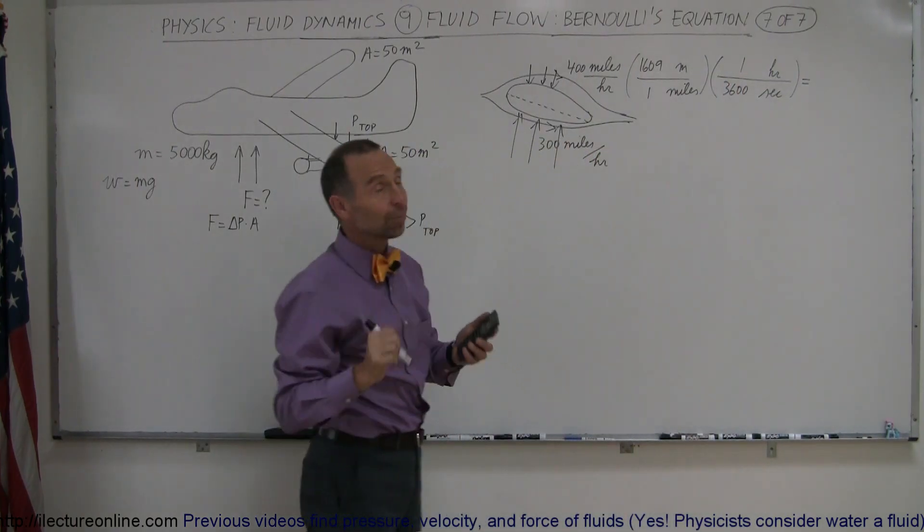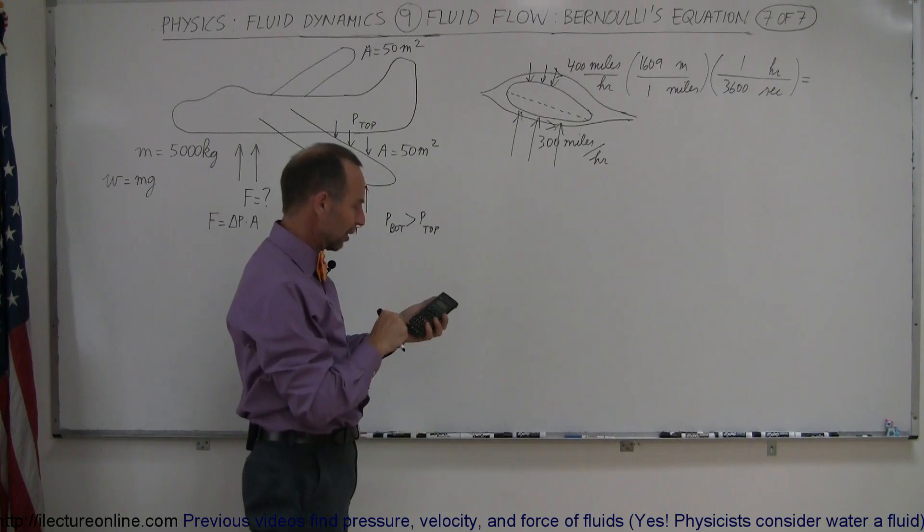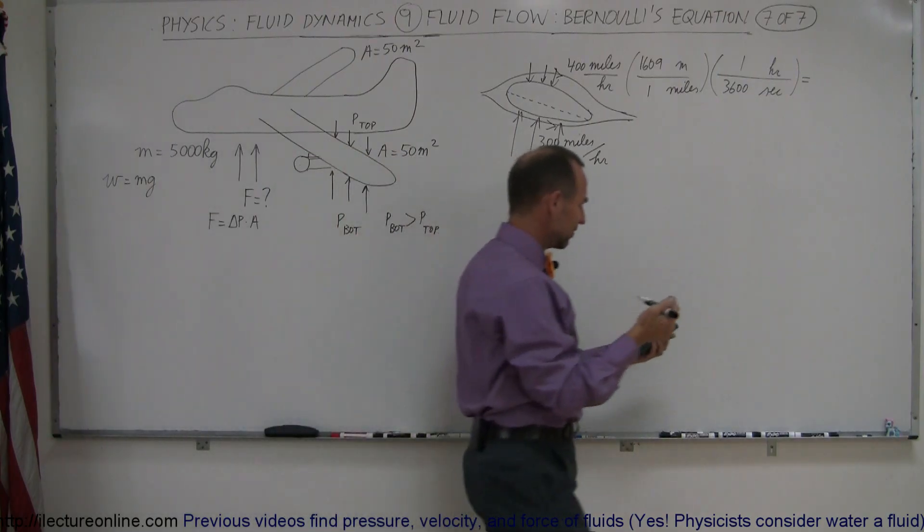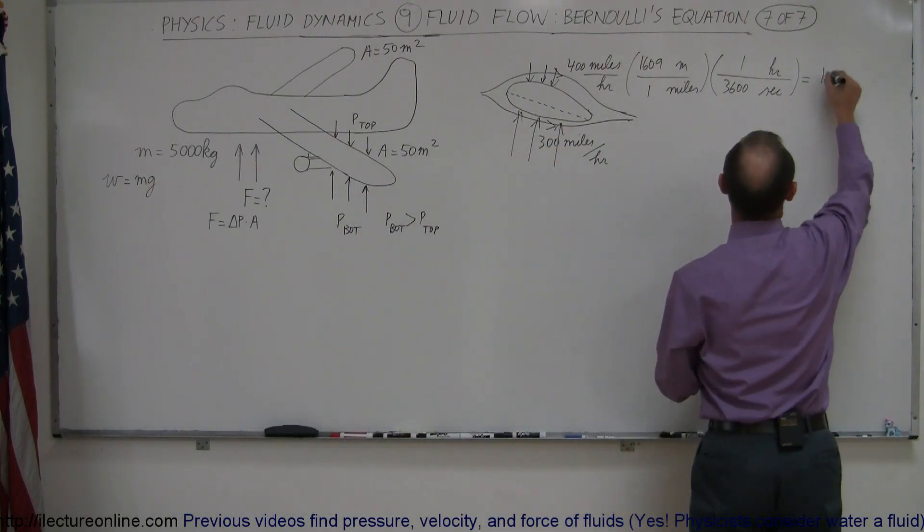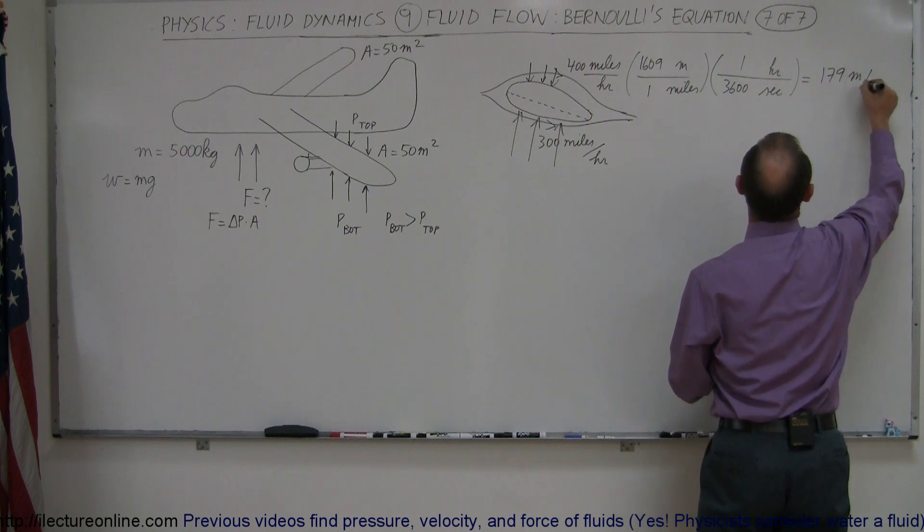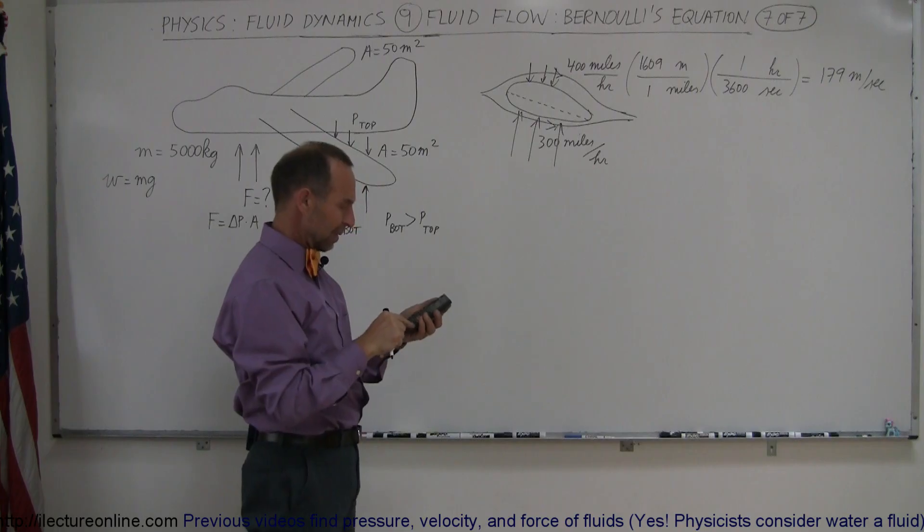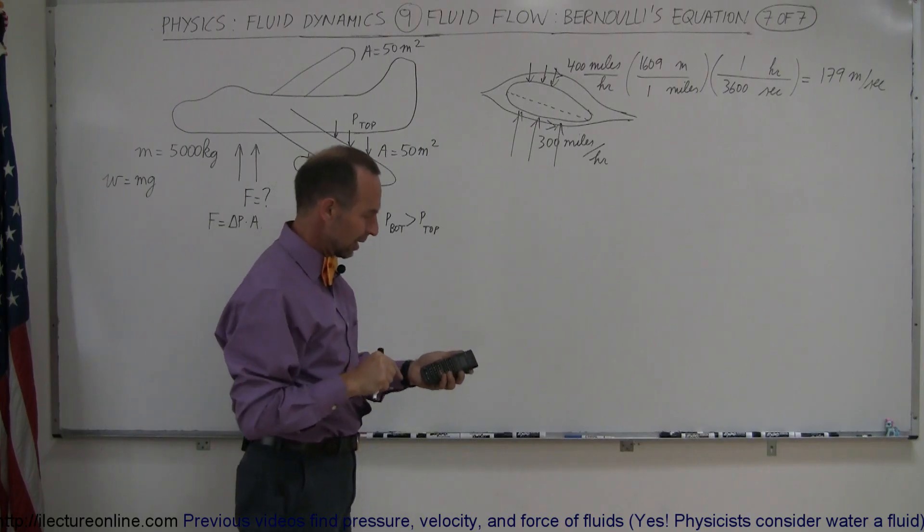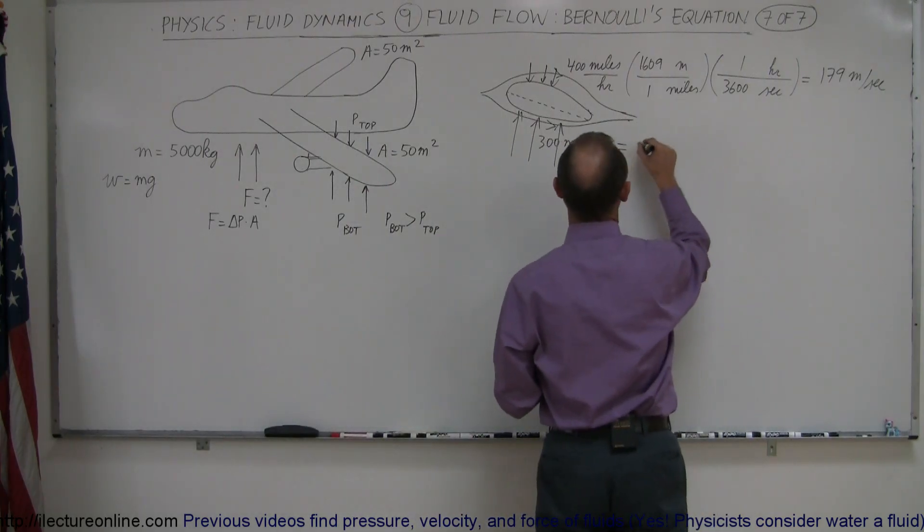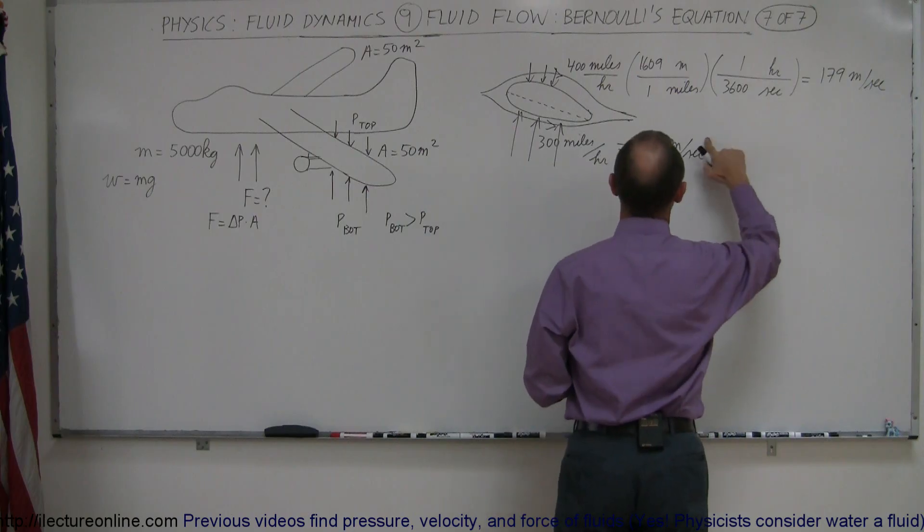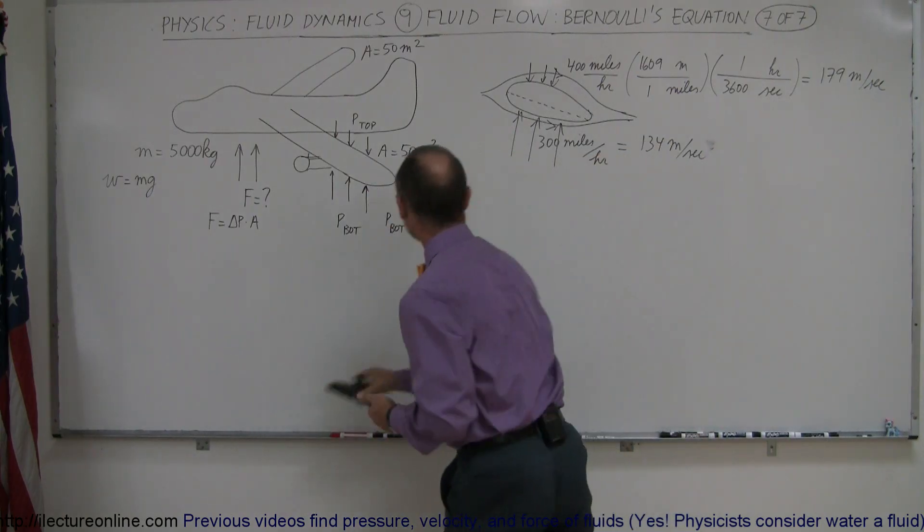So, let's see how many meters per second that is. So, we have 400 times 1609 divided by 3,600, and it looks like 179 meters per second. And then for 300 miles per hour, so that's divided by 4 times 3 equals, and that would be 134 meters per second. So, this would be 134 meters per second. Not per second squared, but simply meters per second.